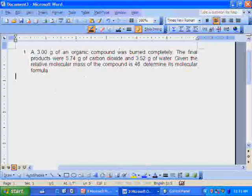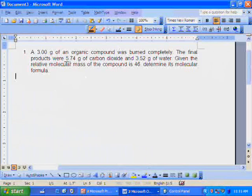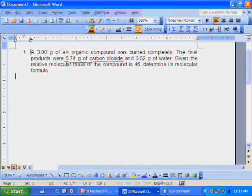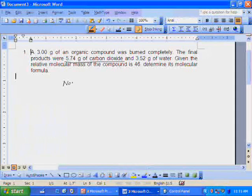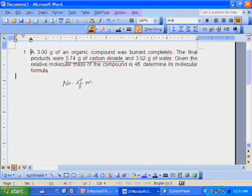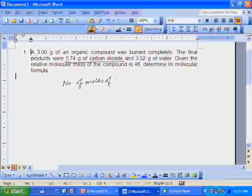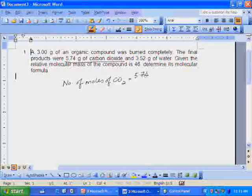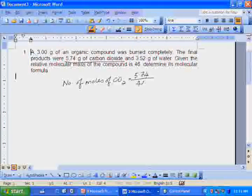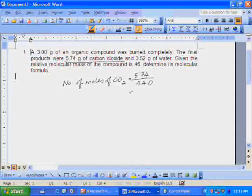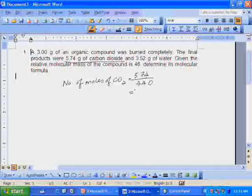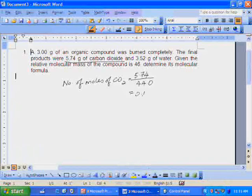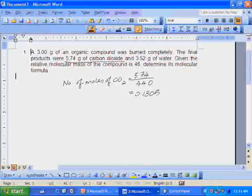We are given that we have this number of grams of carbon dioxide. So this corresponds to this number of moles of carbon dioxide. Just use 5.74 divided by the molar mass which is 44.0. And we will get a value of 0.1305 moles.